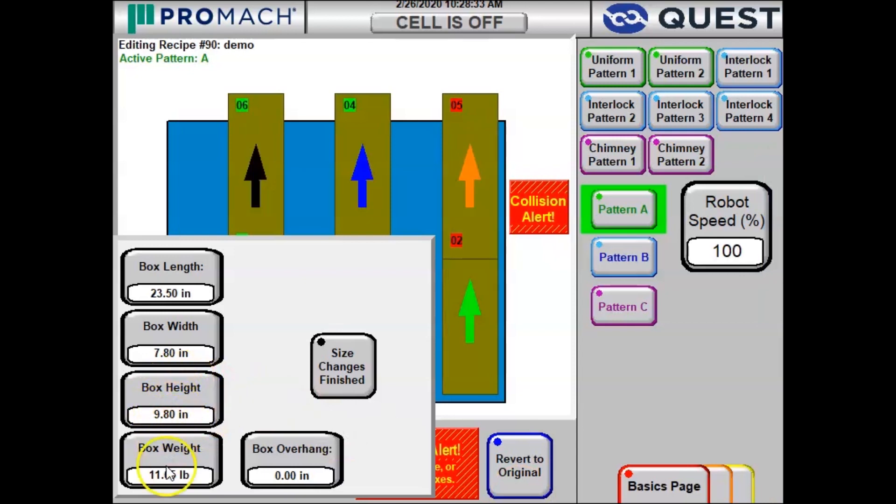We're going to keep the height the same, weight the same, overlap the same. This means that the boxes won't be allowed to overhang the edge of the pallet.